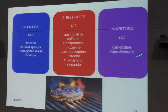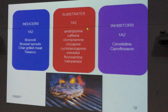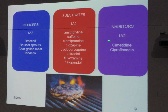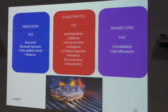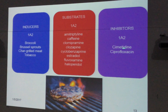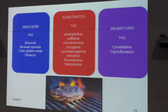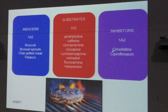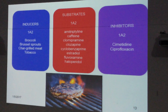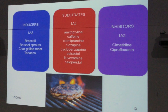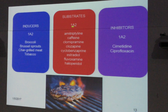And then we have inhibitors. For example, if you are taking caffeine and then you also take cimetidine — cimetidine is a drug taken for gastritis. Ciprofloxacin is an antibiotic given to treat certain infections. So if you are taking caffeine and then you take these inhibitors, do you need a lower or higher dose of caffeine? You will need a lower dose, because these drugs will inhibit the metabolism by CYP1A2.